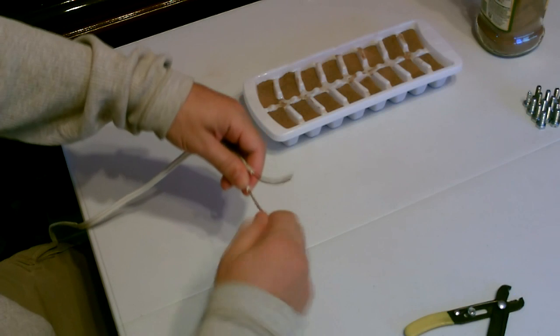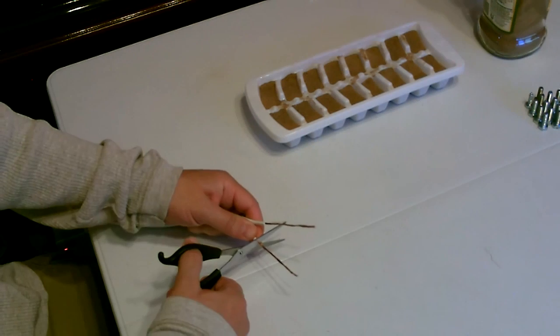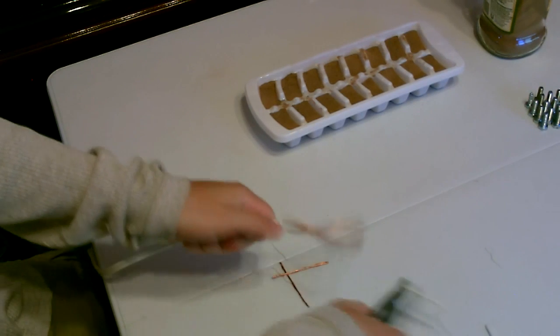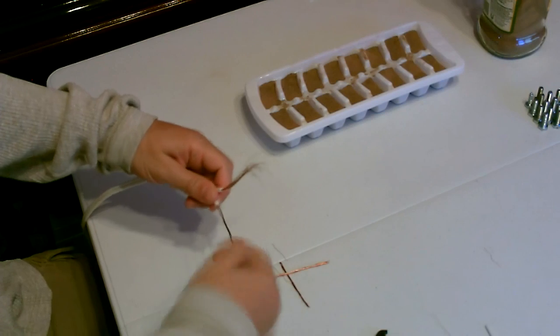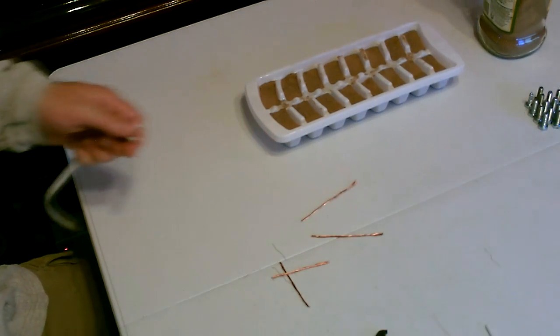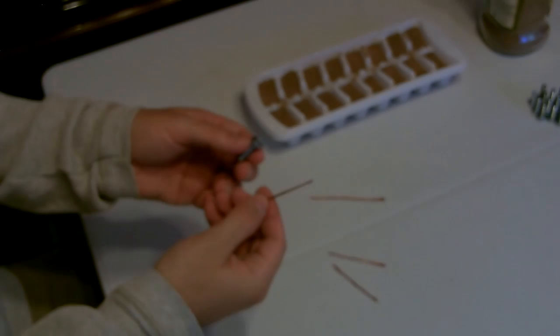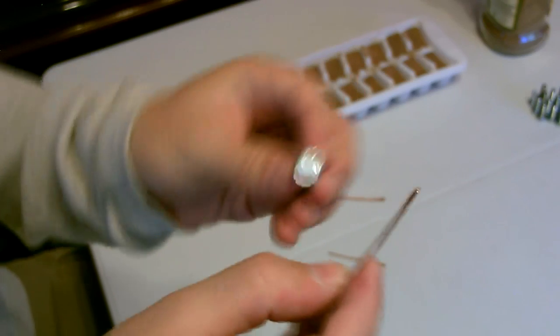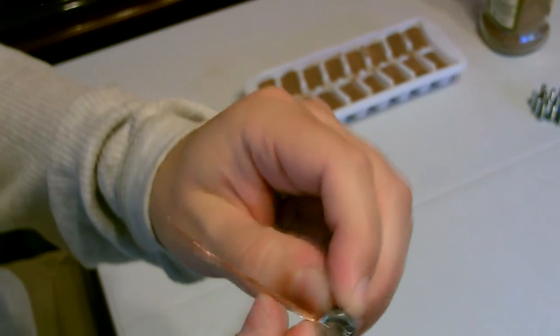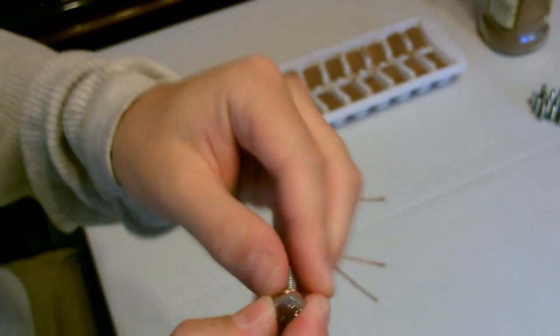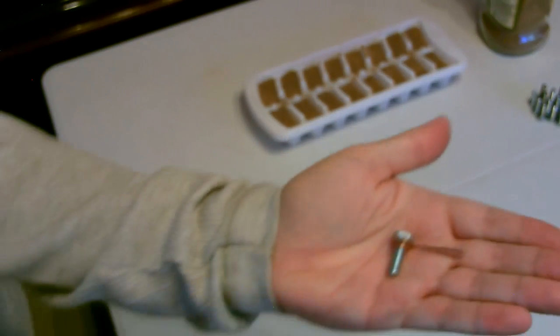And just twist it up. Alright, now just take the two pieces: bolt, copper, wrap it around like this. Nice and tight like that. It should basically look like that.